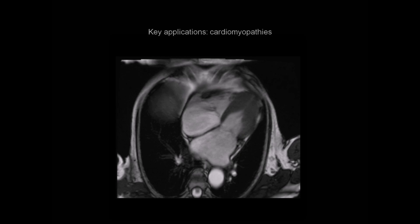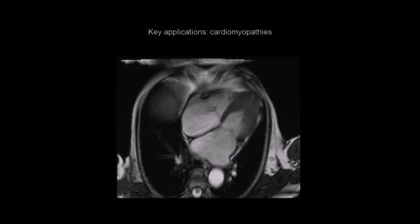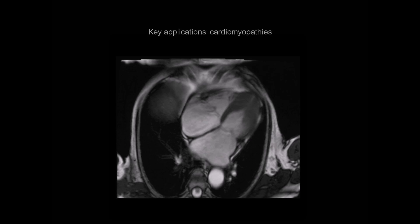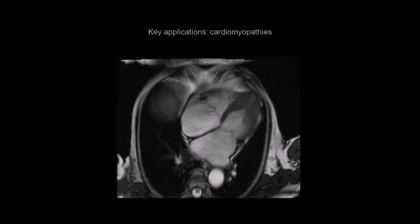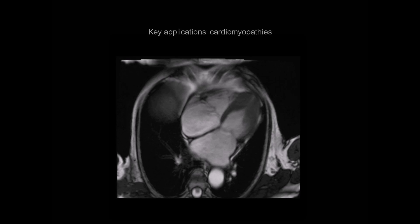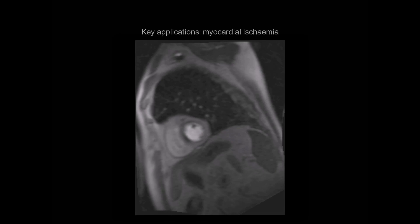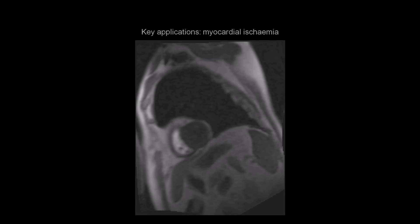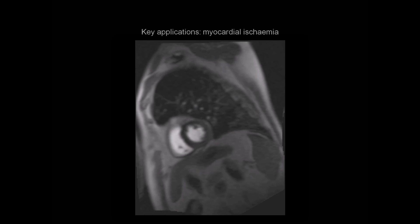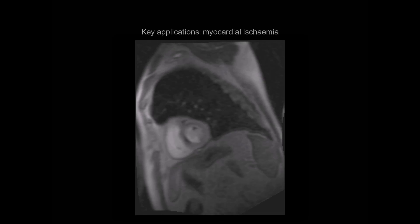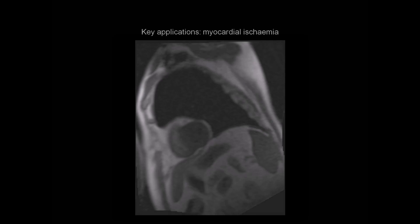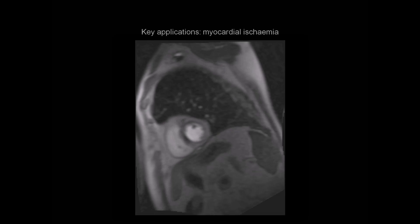CMR is also commonly used to assess the cardiomyopathies, including ischemic cardiomyopathy, dilated cardiomyopathy, and as in this example here, hypertrophic cardiomyopathy. CMR is also commonly used in the assessment of myocardial ischemia, as in this myocardial perfusion study in a patient with LAD disease, shown here.